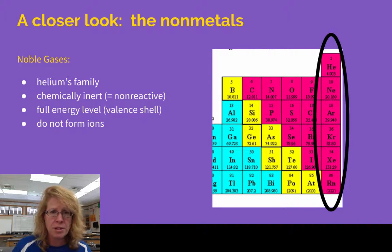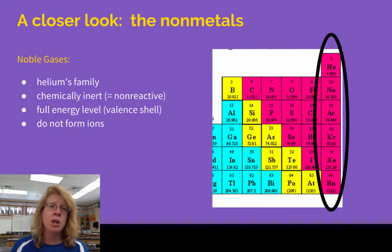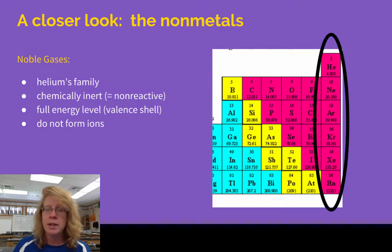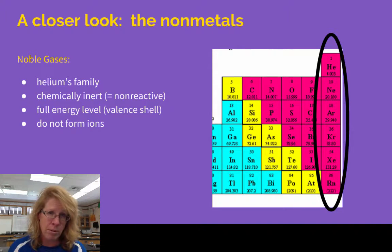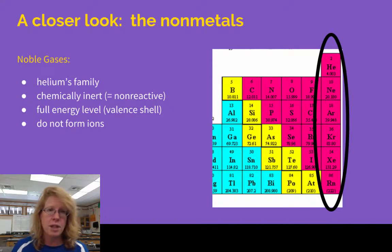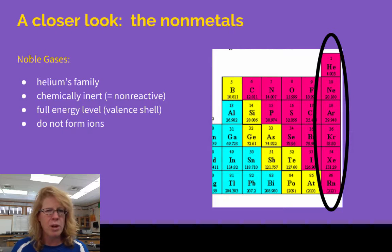First, I'm going to look at the non-metal side. Over on the far right is our noble gases. The noble gases are called noble because they're like kings — they don't associate with the common rest of the elements. They're non-reactive, from helium all the way down to radon. Those atoms have a full valence shell; their energy levels are full. They don't need to gain or lose any electrons, so they don't care about reacting with anybody else. They don't form any ions and don't really participate in chemistry.